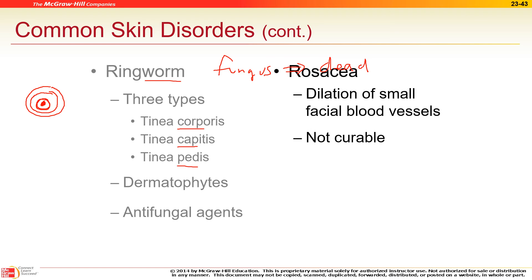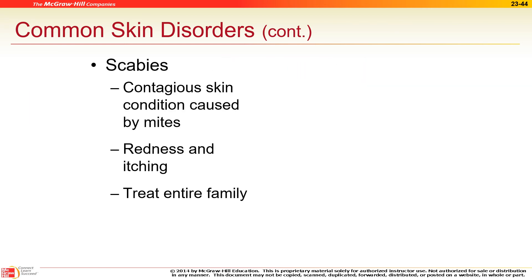Rosacea looks like little blisters or pimples but is actually blood vessels dilating. Laser treatment can zap those blood vessels away. Scabies is a mite infestation — multicellular, so it's an infestation, not an infection. Mites dig their heads into your skin, forming blister-like bumps. Treatment is relatively simple: apply an overnight shampoo or lotion, cover head-to-toe, and shower the next day to eradicate the mites.